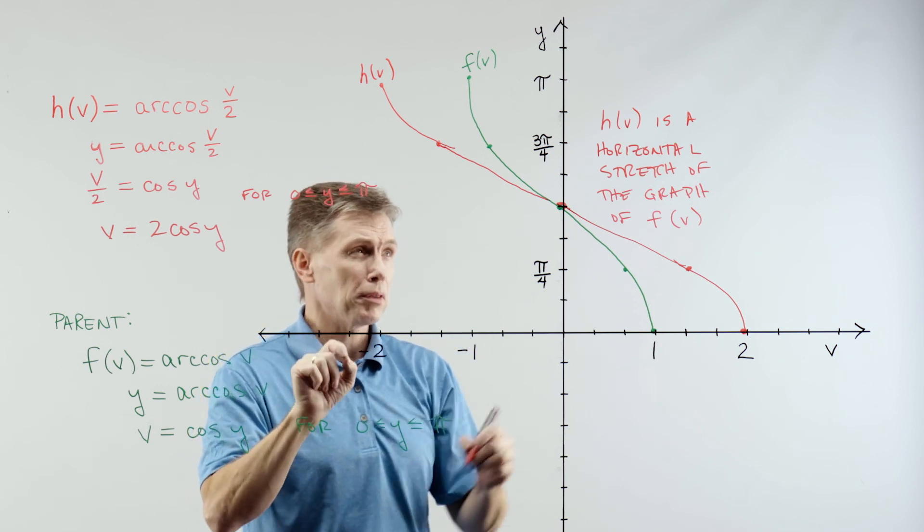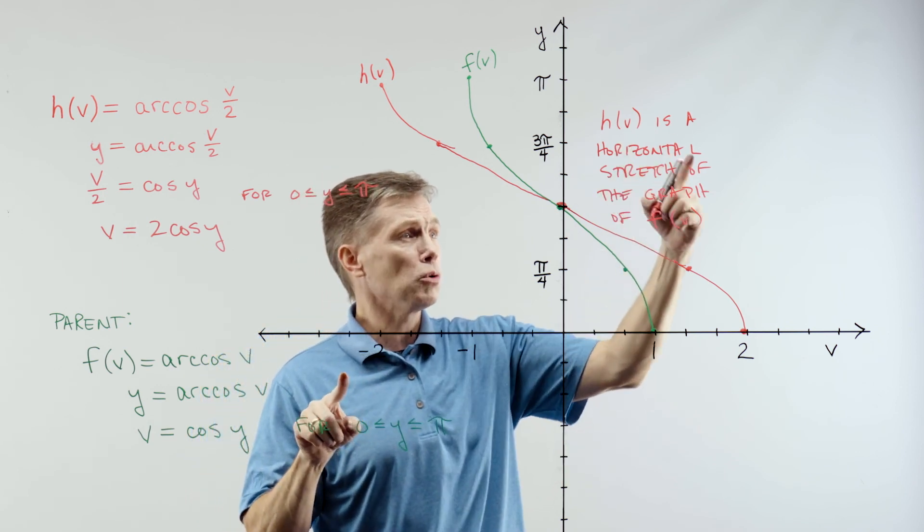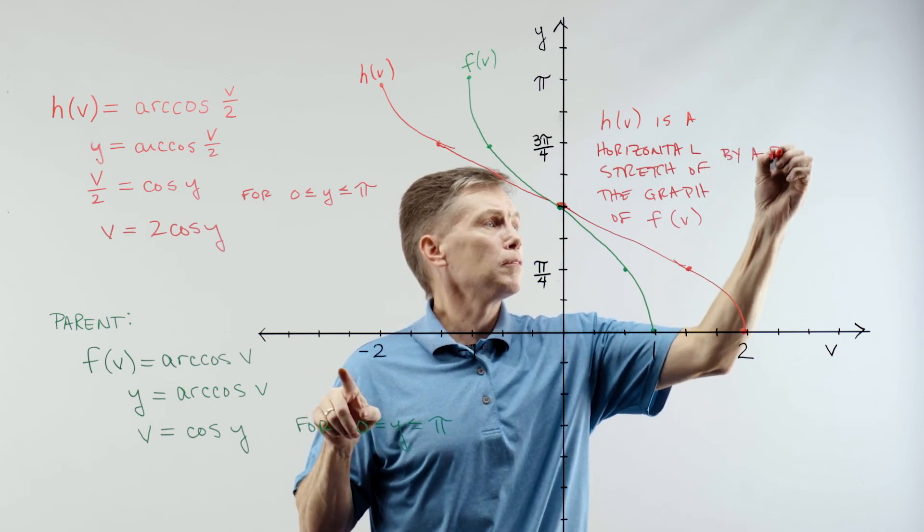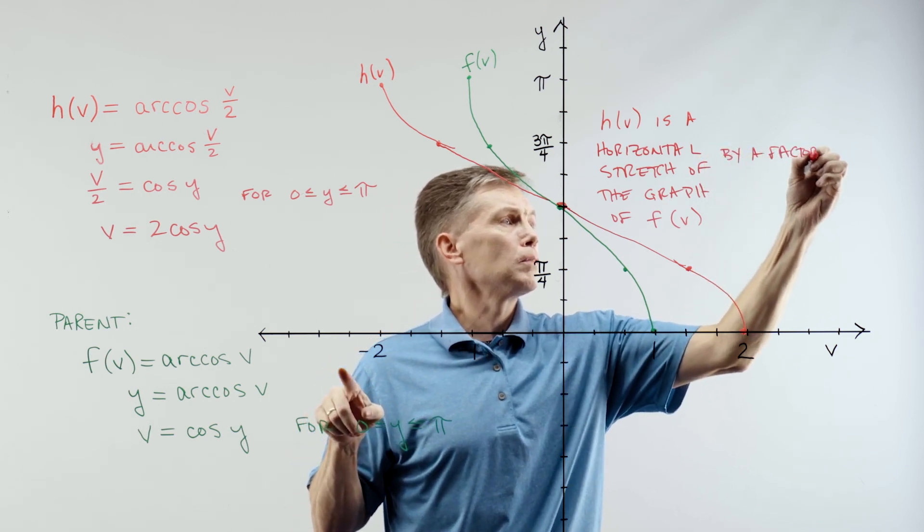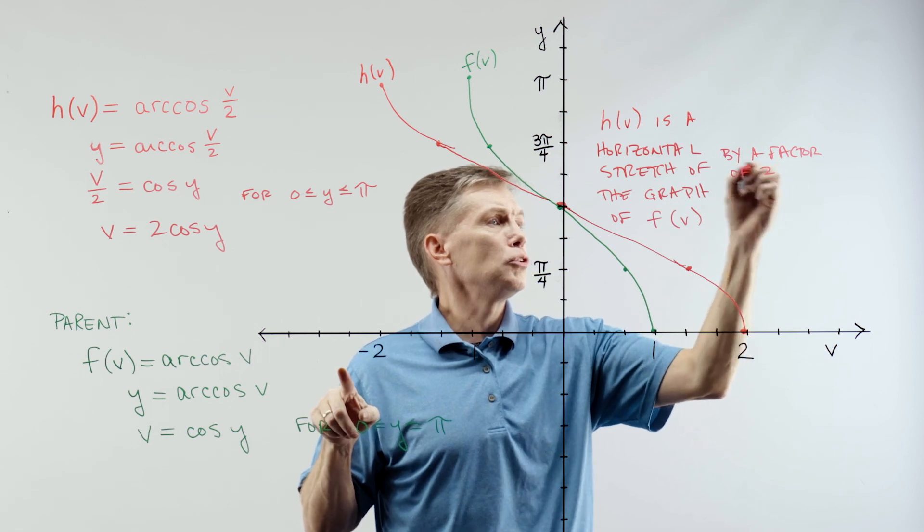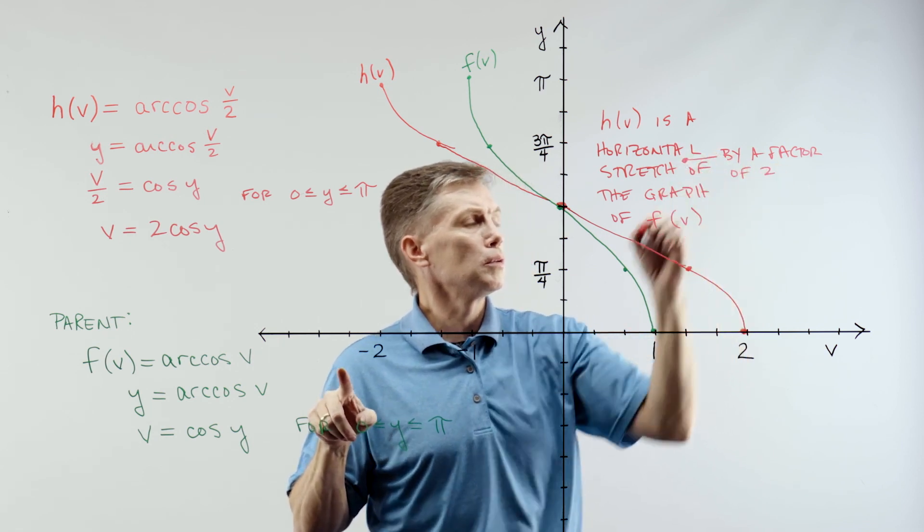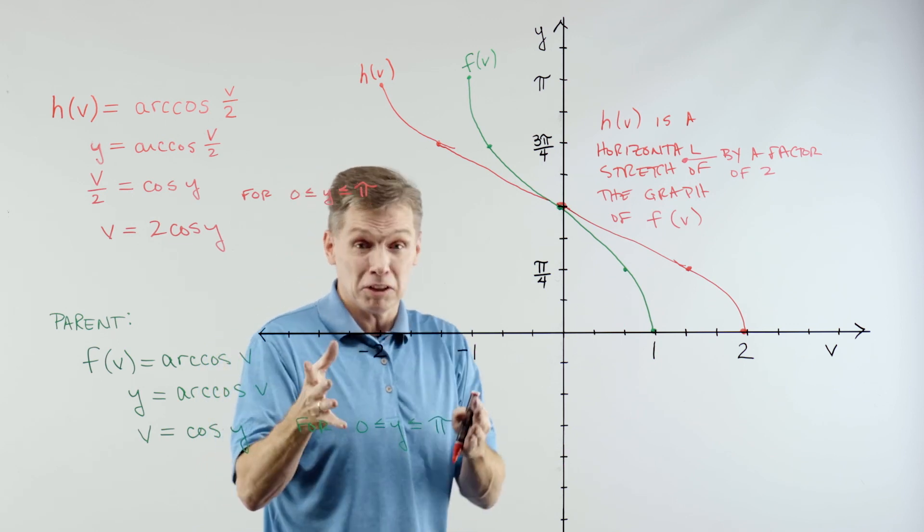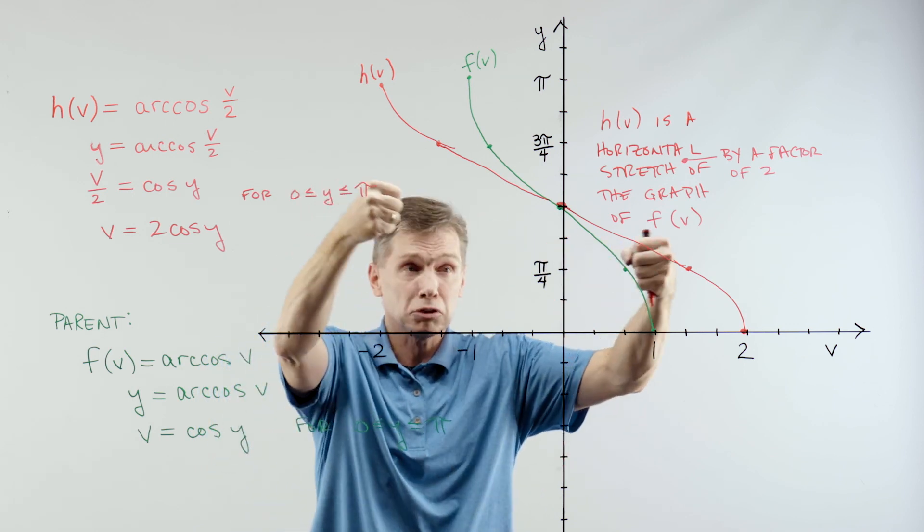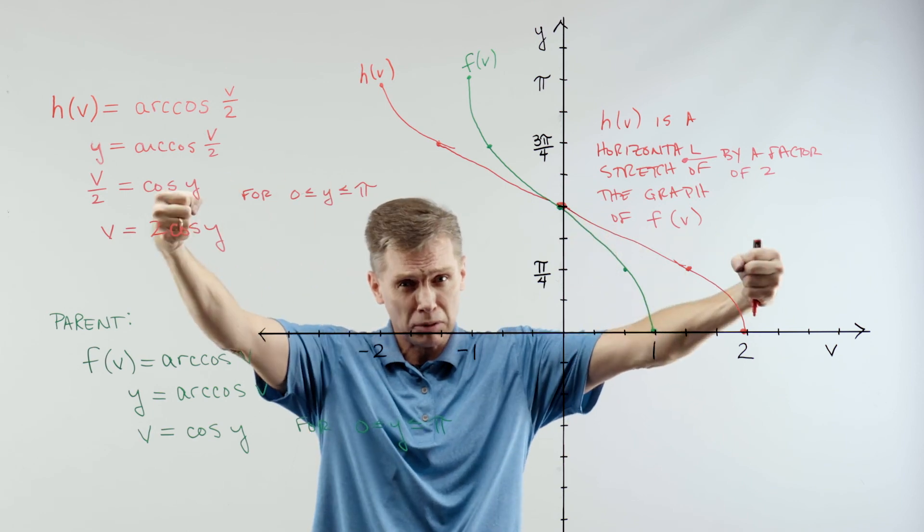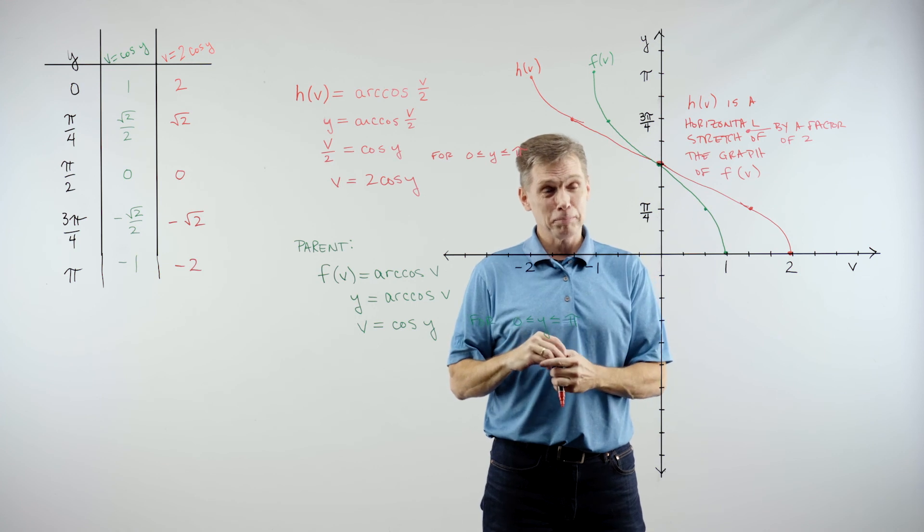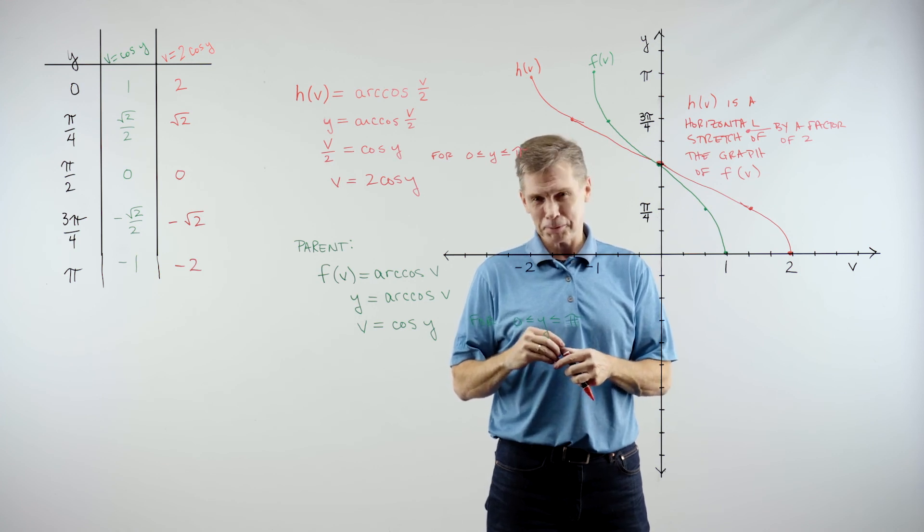In fact, I can do a little bit better than that if I had said h of v is a horizontal stretch by a factor of 2 of the original parent graph. Okay. You can see that, right? That red graph looks like it just took the green graph and stretched from left to right. Okay. A lot of good thinking there, though. So pat yourself on the back, but also try some on your own.